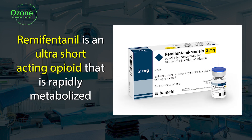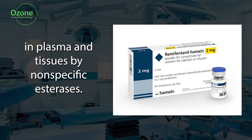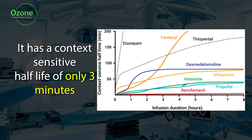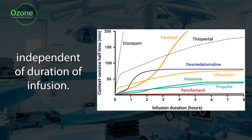Remifentanil is an ultra-short-acting opioid that is rapidly metabolized in plasma and tissues by non-specific esterases. It has a context-sensitive half-life of only 3 minutes, independent of the duration of infusion.